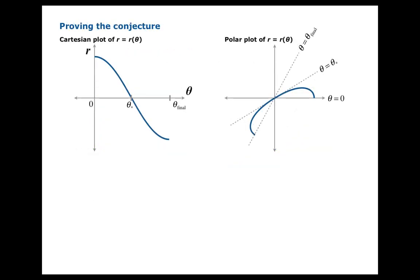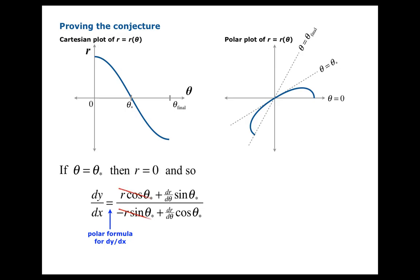How would we go about proving this conjecture? We could employ the polar formula for dy/dx to analyze the tangent slope. If theta equals theta star, we would plug theta star into our formula for dy/dx. But if theta is theta star, then r is zero—that's the whole point. Theta star is a zero of the function. So those two terms cancel, and we're left with this much of the formula.